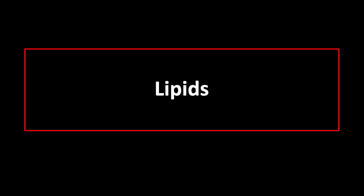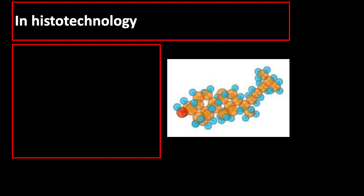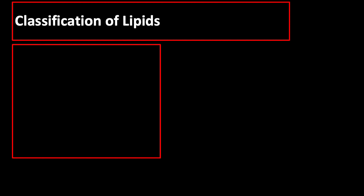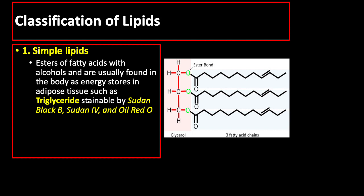We are now on the second part of the lecture: the staining of lipids. In histotechnology, the word lipid refers to all fat and fat-like or fat-containing substances including triglycerides, fatty acids, lipoproteins, and glycolipids. Lipids are generally classified into simple lipids, compound lipids, and derived lipids. Simple lipids or neutral fats are esters of fatty acids with alcohols, usually found in the body as energy stores in adipose tissue, such as triglycerides, stainable by Sudan Black B, Sudan IV, and Oil Red O.